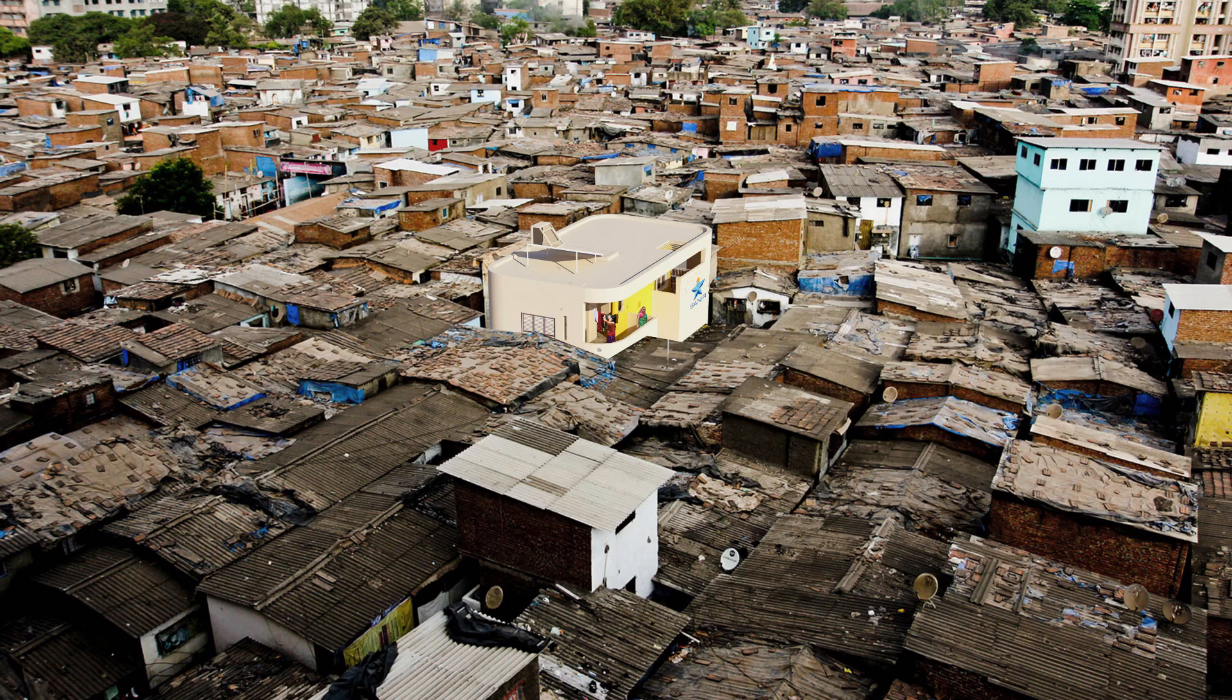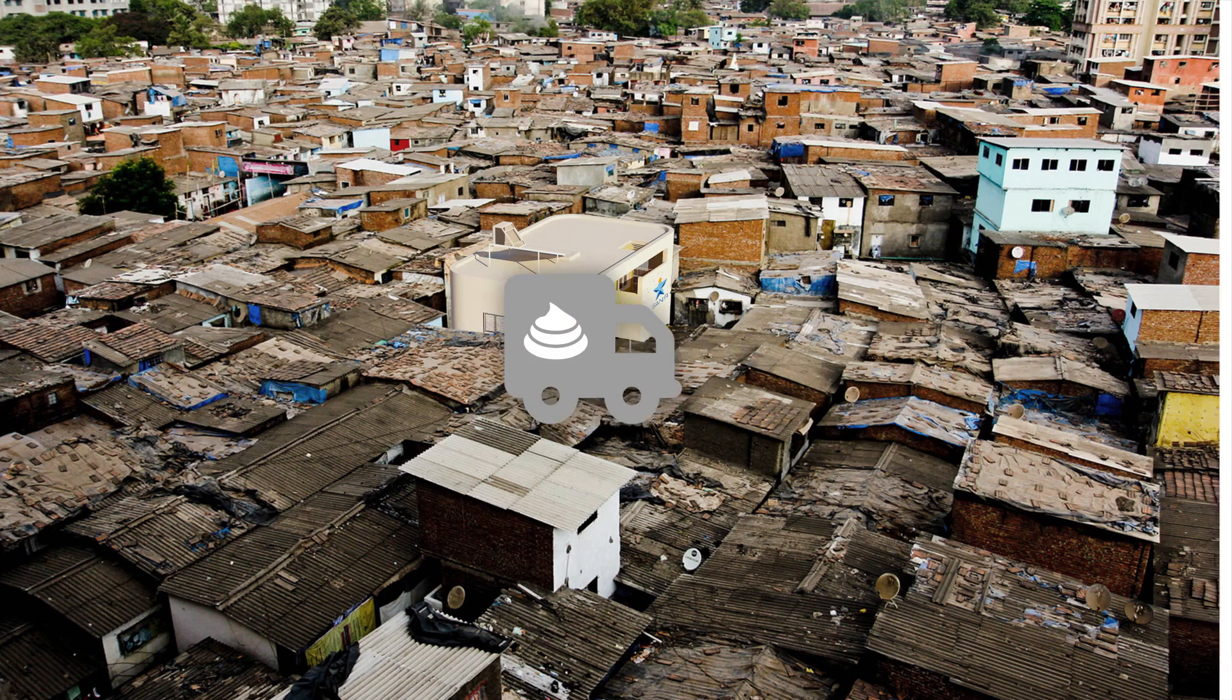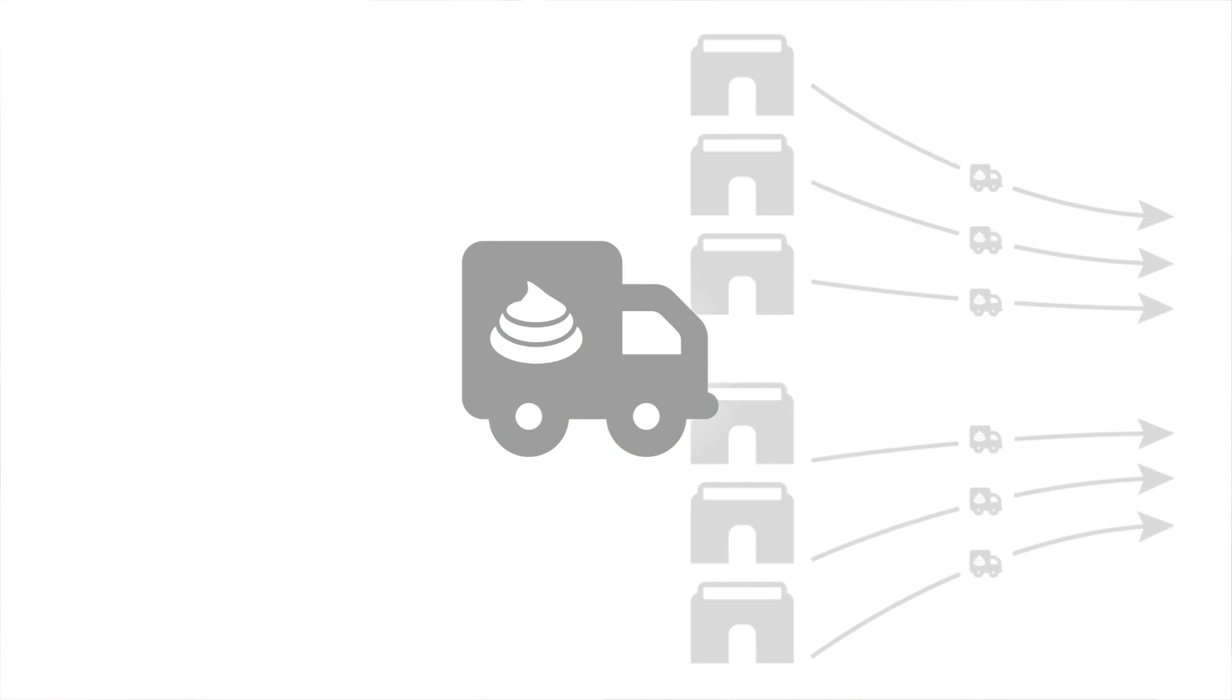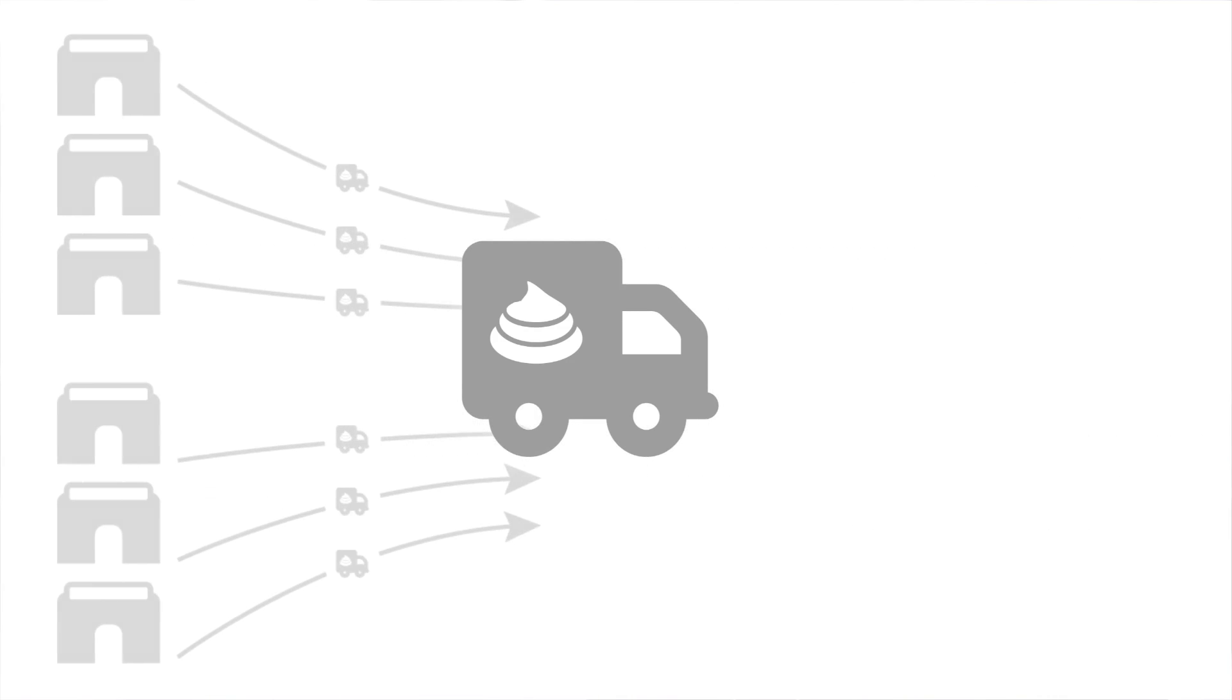At the community center the waste is picked up by a small vehicle. The vehicle brings the waste towards the border of the slum and there it's picked up by a bigger truck that collects the waste of all the community sanitation centers and then it's brought to the central processing plant.